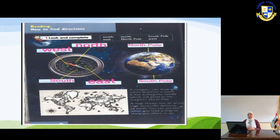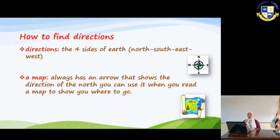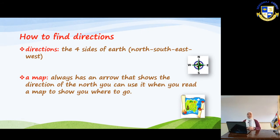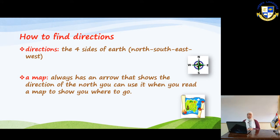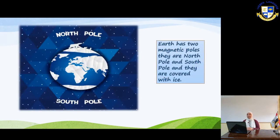The next definition is a map. What is a map? A map shows you the way, and it always has an arrow to show the north direction. You can use it when you read a map to show you where to go.